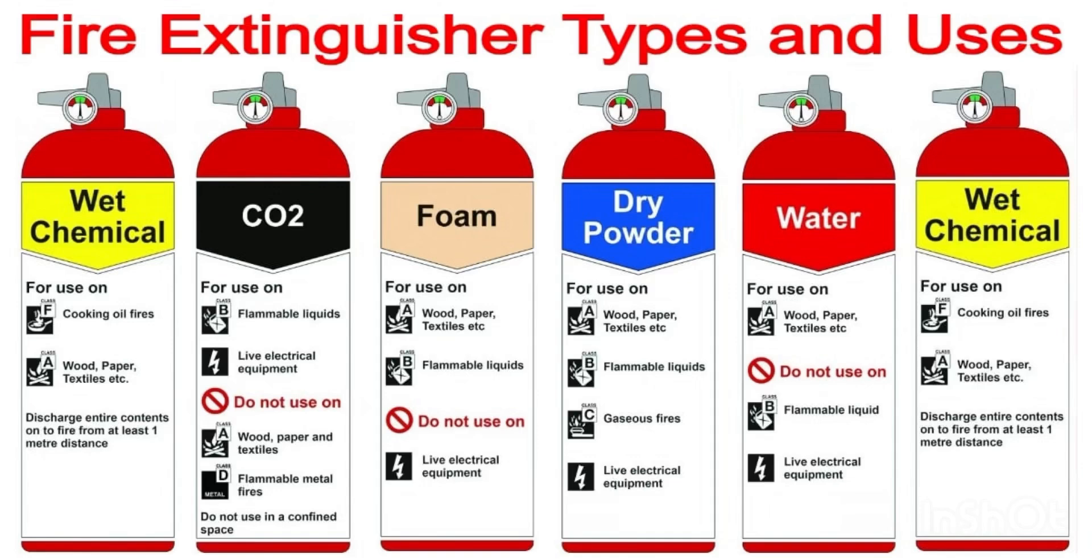Second, carbon dioxide type for use on class B fire and class E fire. Class B is flammable liquids. Class E is electrical fire like short circuits. Remember, do not use on class A fire or class D fire: wood, paper, textile and flammable metal fire because this is CO2.